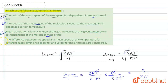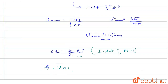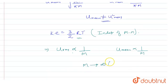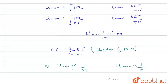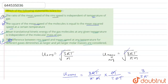Option D says: the difference between RMS speed and mean speed at any temperature for different gases diminishes as larger and larger molar masses are considered. Since μ_rms and μ_mean are both inversely proportional to √M, when molar mass tends to infinity, both μ_rms and μ_mean tend to zero, and the difference between them diminishes. So option D is correct.